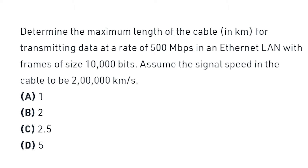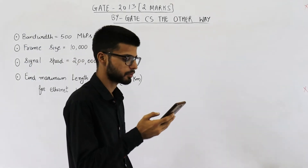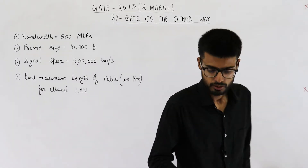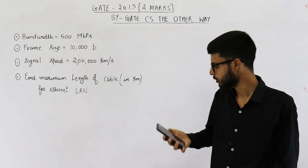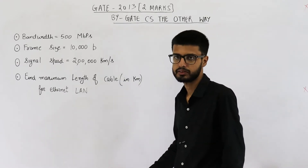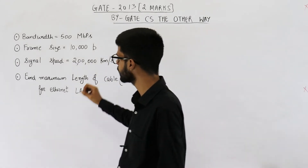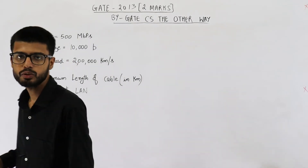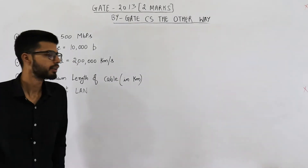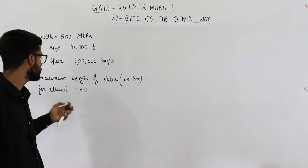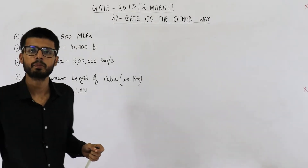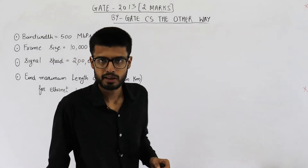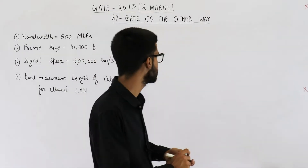Assume the signal speed in the cable to be two lakh kilometers per second. We are using CSMA/CD here because the network is Ethernet LAN. So the question belongs to the topic: Carrier Sense Multiple Access with Collision Detection.